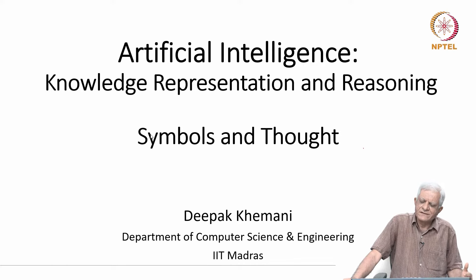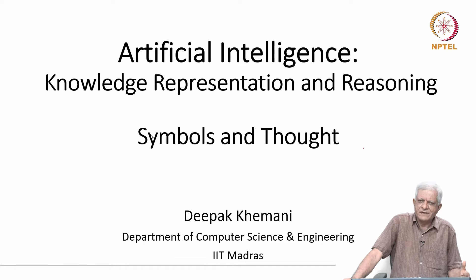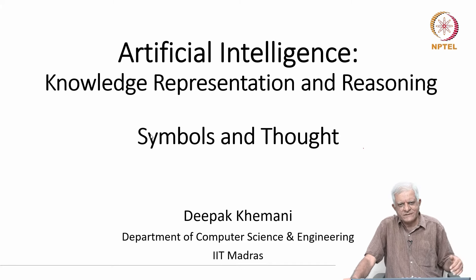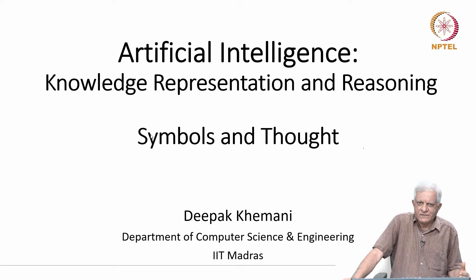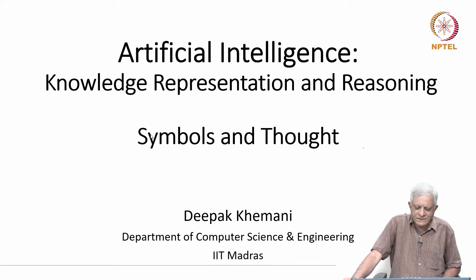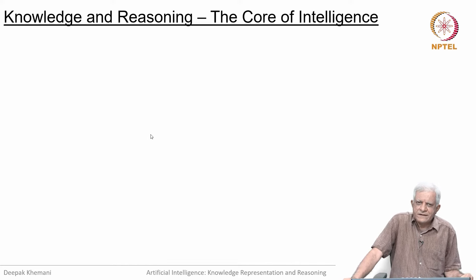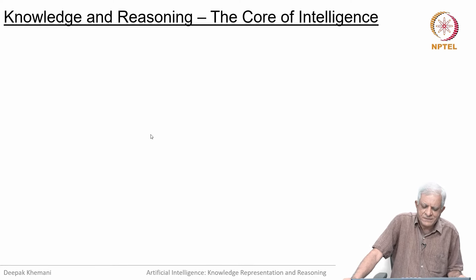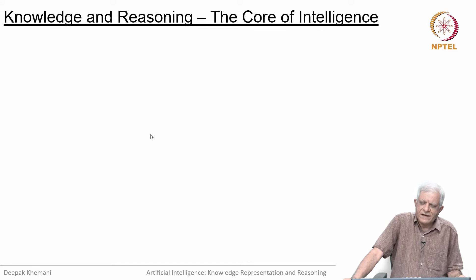Our first few lectures will be more to do with human mind and human thought, because this kind of discussion has been going on for a few hundred years, much before computers were born. And then we will come to the fact that we want our machines to be thinking machines and what they need to be thinking machines. As discussed in the introduction, the main part of this course is to do with knowledge representation and reasoning, which we have said is the core of intelligence.